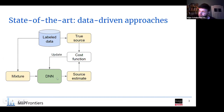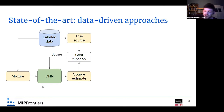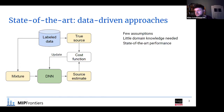The deep neural network takes as input a mixture, estimates our source — for example, the singing voice — and we compare this with a cost function to what the true singing voice would have been. Accordingly, we update our network. If we do this often enough, in the end we get really good estimates.